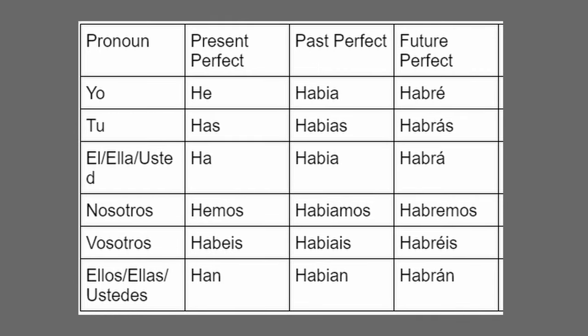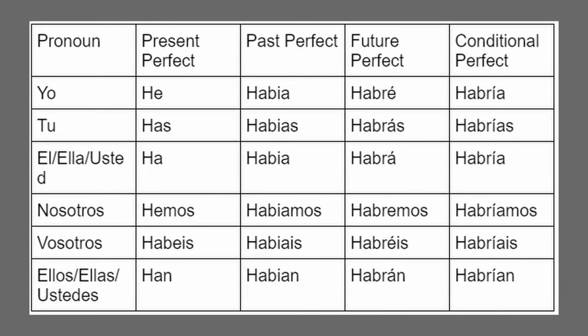In the future perfect — yo habré hablado (I will have spoken), tú habrás hablado (you will have spoken), él/ella/usted habrá hablado (he/she/you formally will have spoken), nosotros habremos hablado (we will have spoken), vosotros habréis hablado (you all will have spoken), ellos/ellas/ustedes habrán hablado (they/you all will have spoken). In the conditional perfect — yo habría hablado (I would have spoken), tú habrías hablado (you would have spoken), él/ella/usted habría hablado (he/she/you formally would have spoken), nosotros habríamos hablado (we would have spoken), vosotros habríais hablado (you all would have spoken), ellos/ellas/ustedes habrían hablado (they/you all would have spoken).